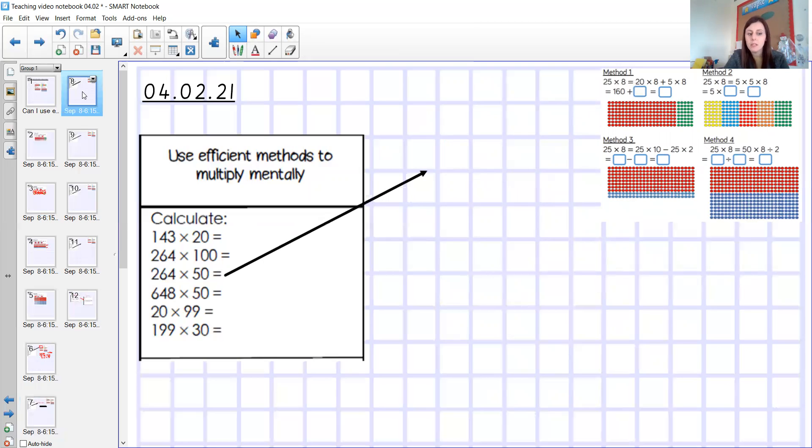And number three, very similar to number two, isn't it? It's the same 264. But this time, I'm multiplying by 50 and not by 100. Therefore, if I know that 264 times by 100 gives me 26,400. Therefore, I know that my answer to this one is going to be what? Yes, I've kind of used method four here, haven't I? I've got the big number, but now I need to divide that by two. I'm not going to do the answer for you. I want you to have a go at working that out for yourself. But that's the methodology that you need to use for that one.